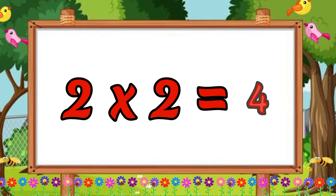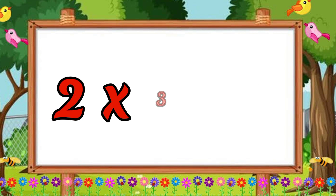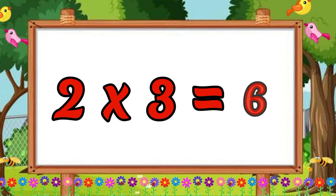Two twos are four. Two twos are four. Two threes are six. Two threes are six.